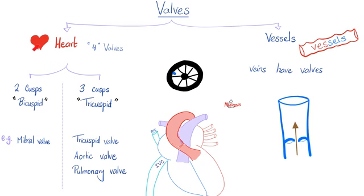The heart has valves. Vessels have valves — I'm talking about veins. Arteries don't have valves. Capillaries don't have valves. Only veins do. The heart has four valves: mitral valve, tricuspid valve, aortic valve, and pulmonic valve. All of them have three cusps except the mitral valve, which only has two cusps. Remember the bishop's hat — la mitre.